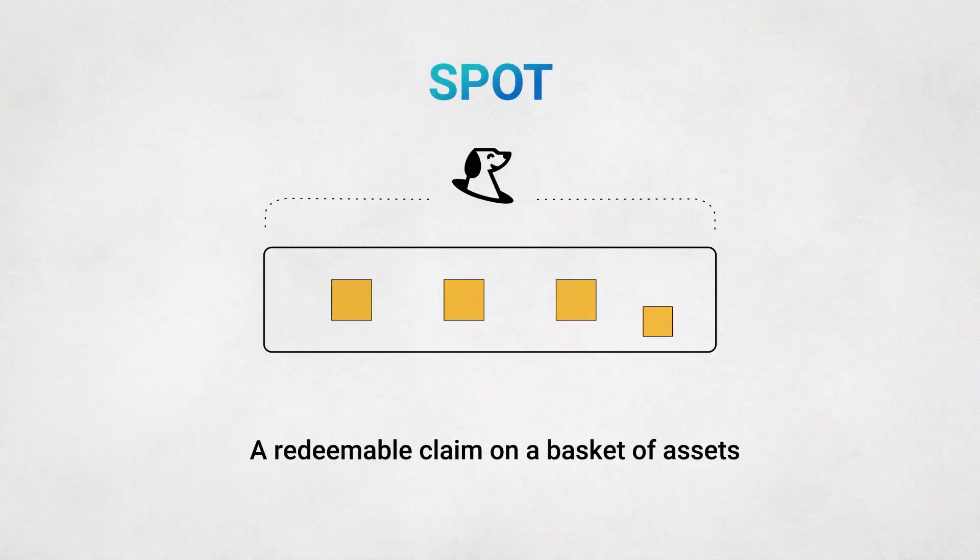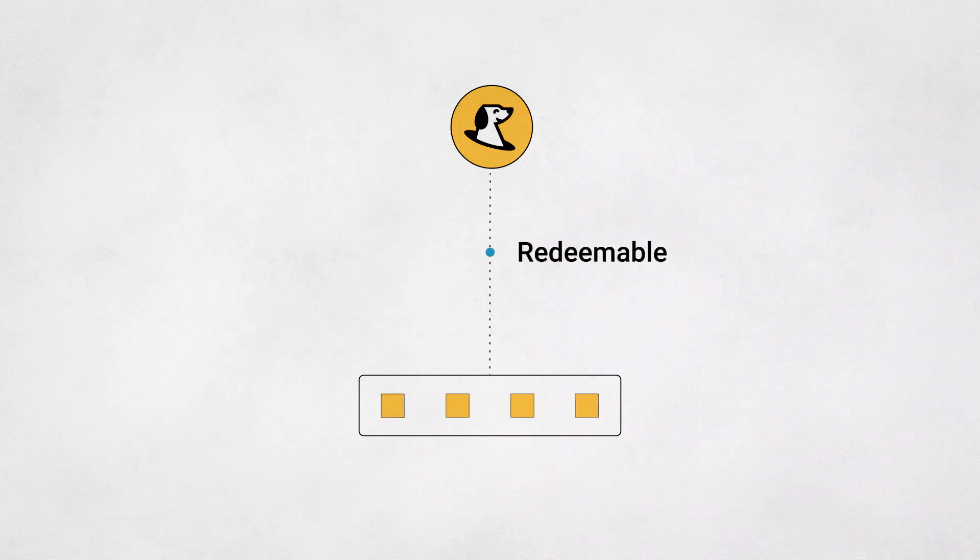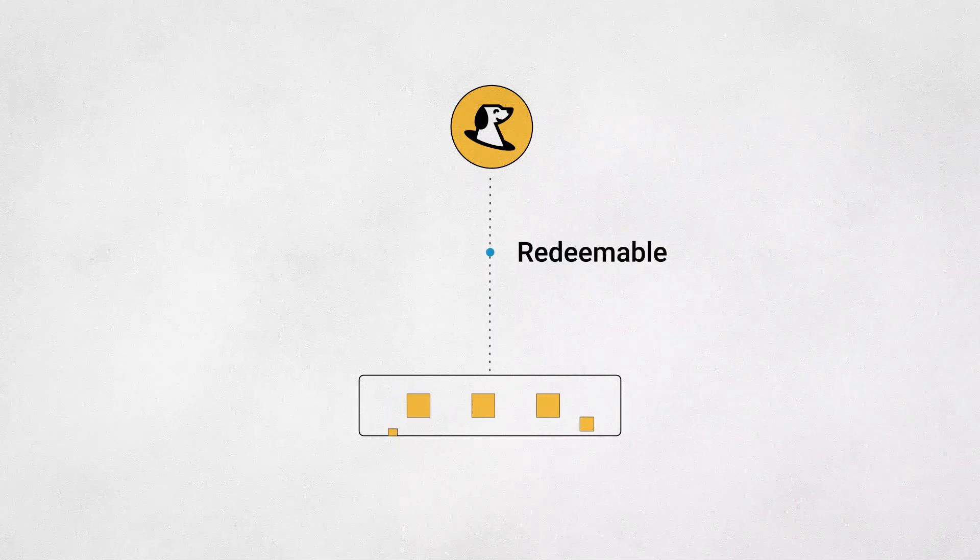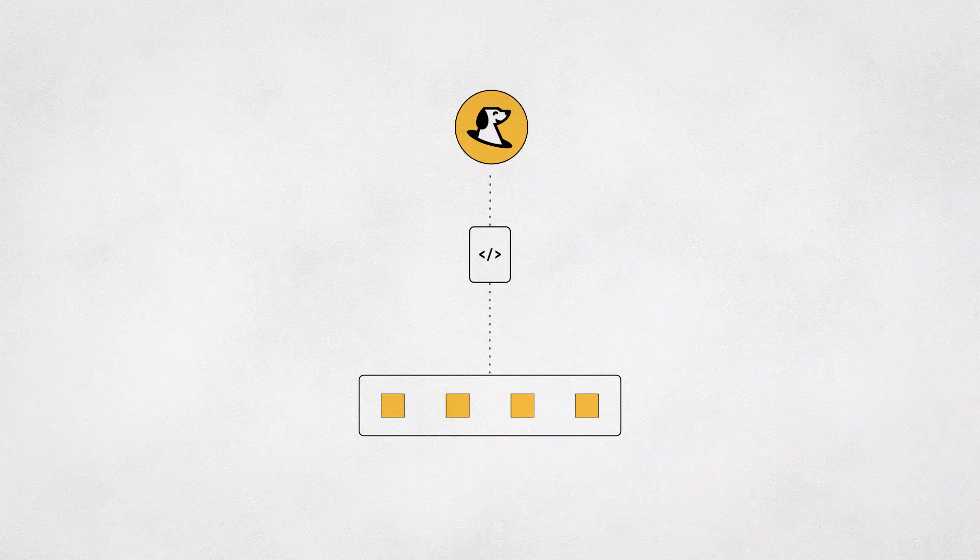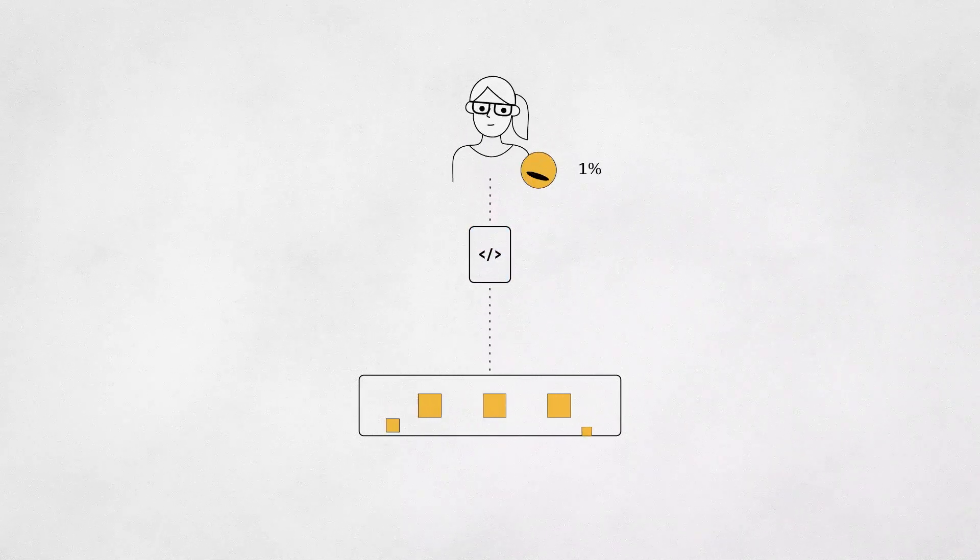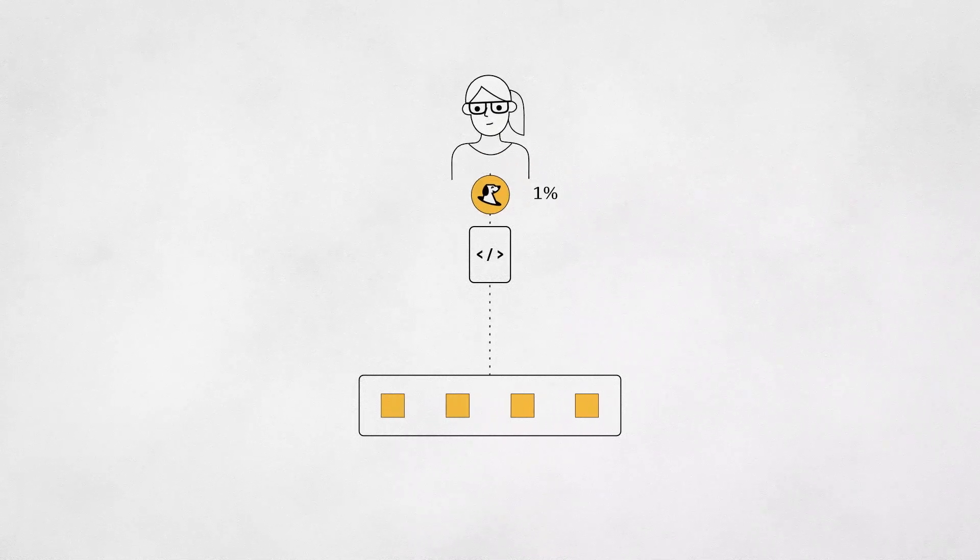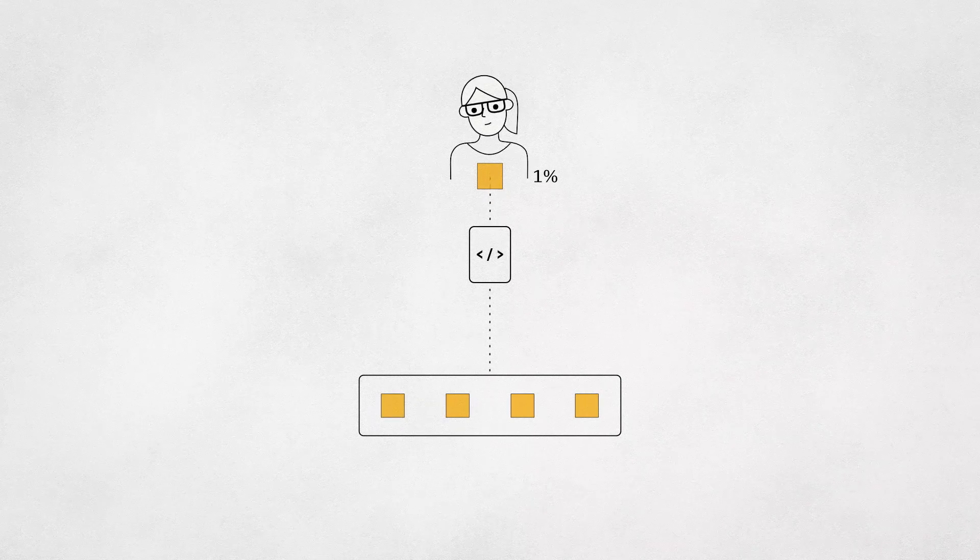The SPOT token is simply a redeemable claim on a basket of assets. This means that a holder of SPOT tokens can redeem those SPOT tokens for a percentage of SPOT's collateral set through a smart contract at any time. Imagine Alice holds 1% of all SPOT tokens. At any time, she can redeem her SPOT tokens for 1% of the assets in SPOT's basket of collateral.